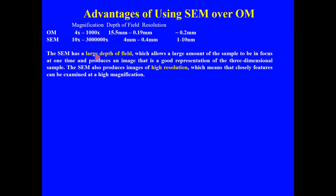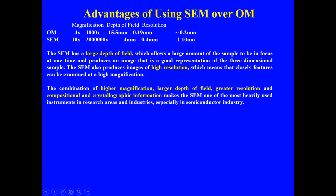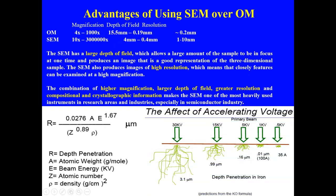The SEM has a large depth of field, which allows a large amount of the sample to be in focus at one time and produces an image that is a good representation of a three-dimensional sample. The SEM also produces images of higher resolution, meaning closely spaced features can be examined at high magnification. The combination of higher magnification, larger depth of field, greater resolution, and compositional and crystallographic information makes the SEM one of the most heavily used instruments in research and industry, especially in the semiconductor industry.